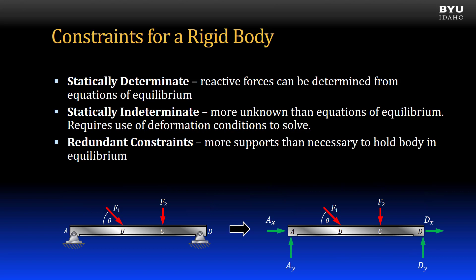Now that we have statically indeterminate structures defined, we can define redundant constraints. A structure that has redundant constraints means it has more supports than necessary to hold the body in equilibrium. In other words, a body with redundant constraints is statically indeterminate. From our previous example, the beam has one redundant constraint, either Ax or Dx. If we remove one of them, the structure will still be in static equilibrium.